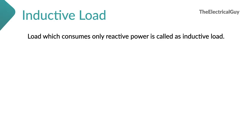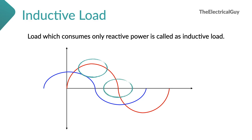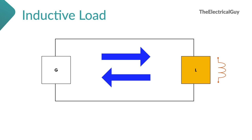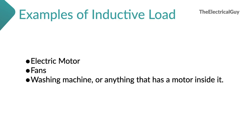Now let's understand inductive load. Load which consumes only reactive power is called as inductive load. And if you look at the voltage and current waveforms of such load, you will find that the voltage and current are out of phase with each other by 90 degrees. Both waveforms reach their peak value at different times and also reach zero at different times — one example you can see on your screen. Voltage has a head start compared to current, so we can say current is lagging behind the voltage. Power can flow from source to load or even from load to source, and the power factor of such loads is lagging in nature.